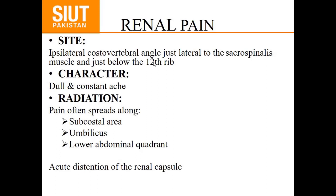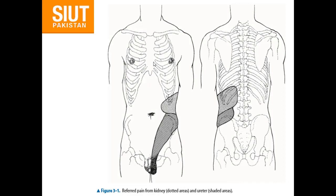The character of renal pain is dull and constant. Renal pain radiates towards the subcostal area, the flank, and the lower abdominal quadrant. This is due to the distension of the renal capsule. As shown in the picture, the dotted area represents the localization of renal pain, and the area below this is the ureteric pain.